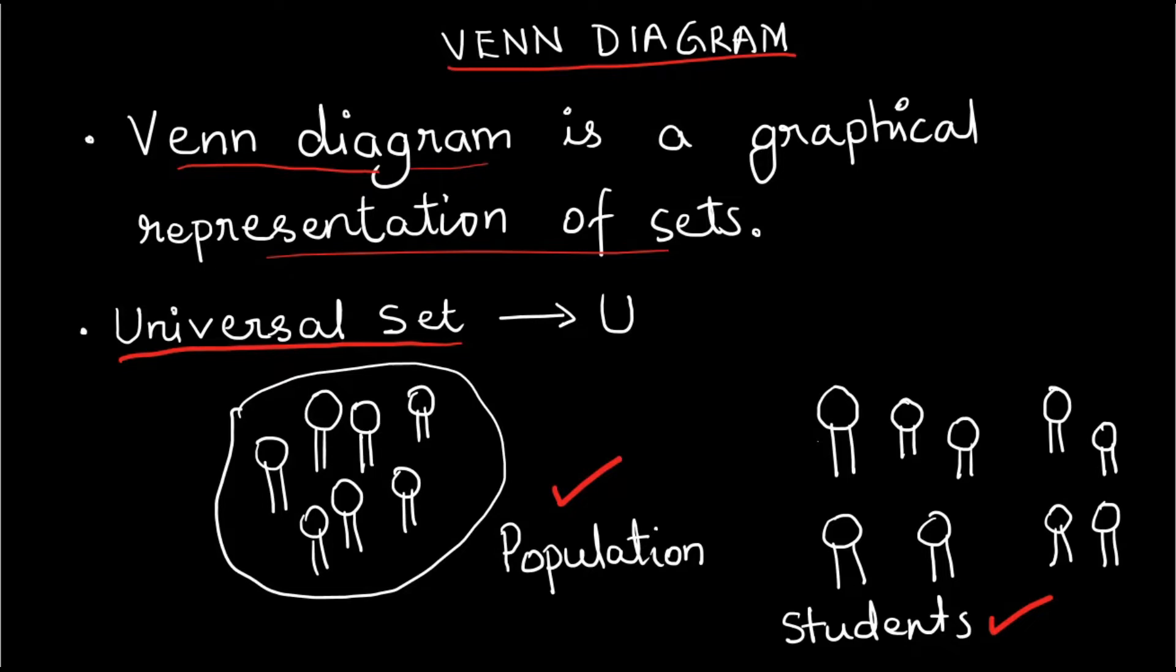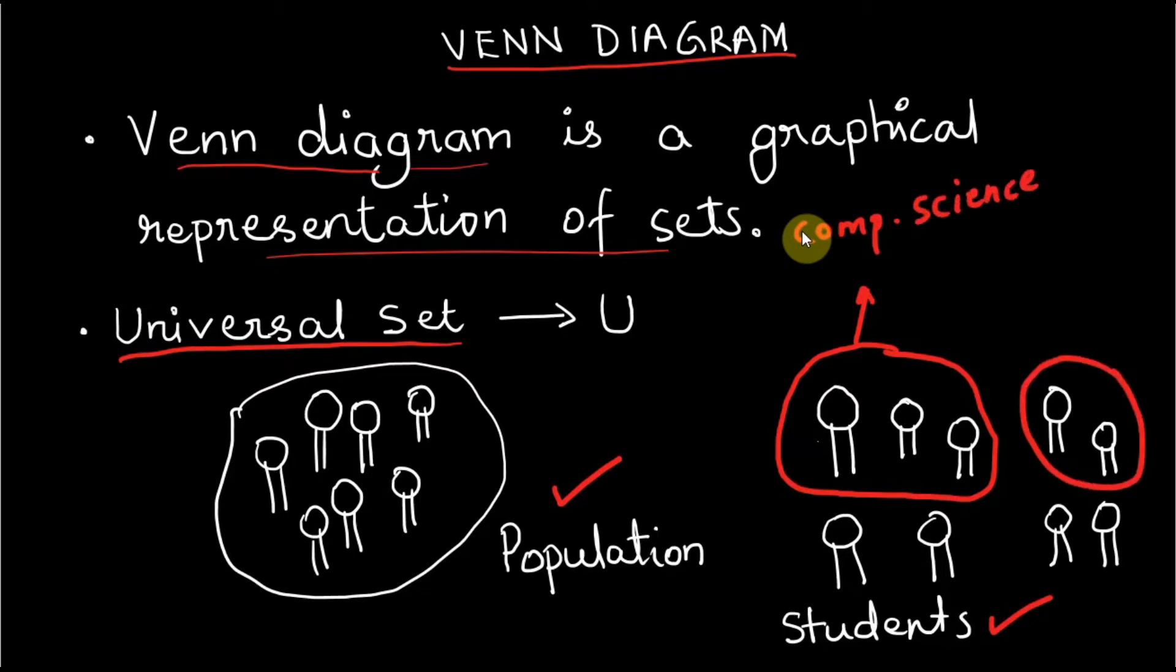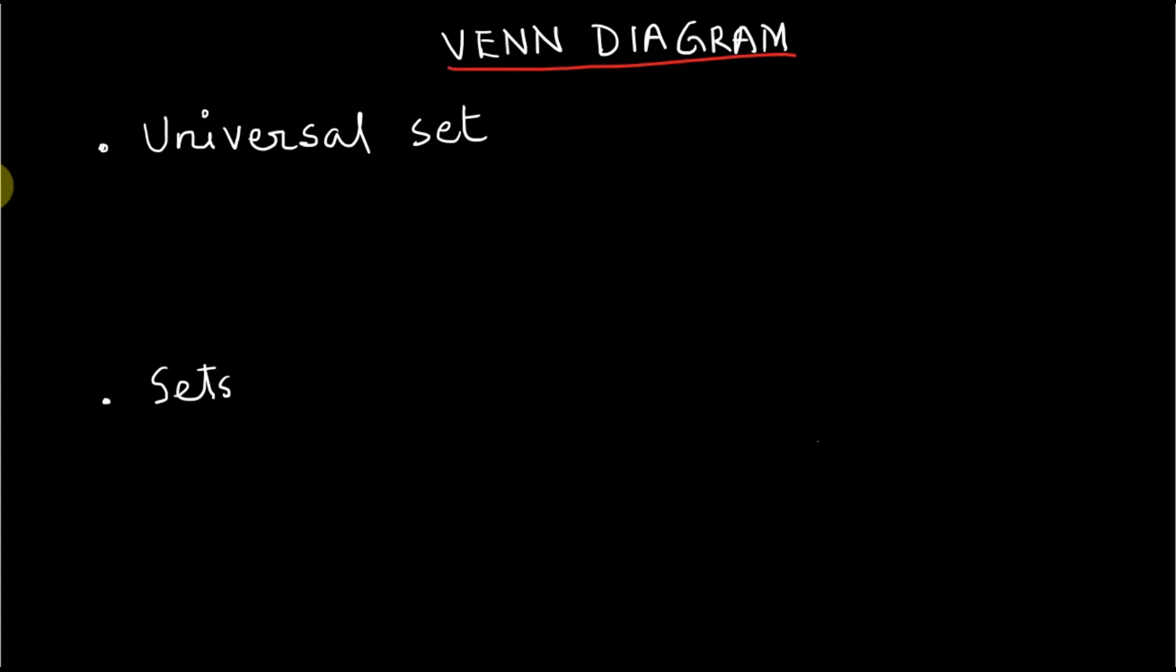If students from university belong to our universal set, then we can have a set of students studying computer science or mathematics. In Venn diagram, the universal set is a rectangle and sets are circles that may or may not overlap each other.